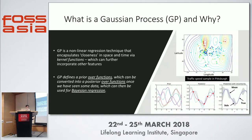The main advantage of Gaussian process is that it is a nonlinear regression technique that encapsulates the concept of closeness in space and time using kernel functions, which can further incorporate static features such as infrastructure. At the same time, it is also a Bayesian method.